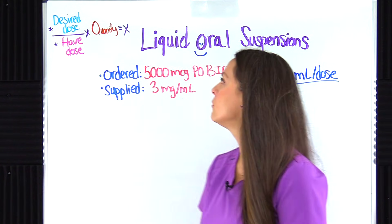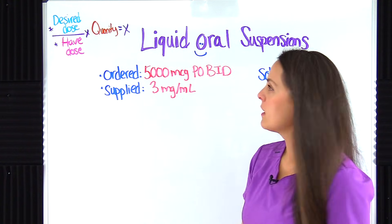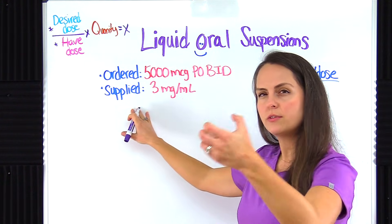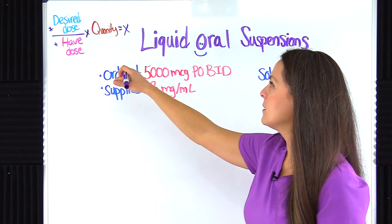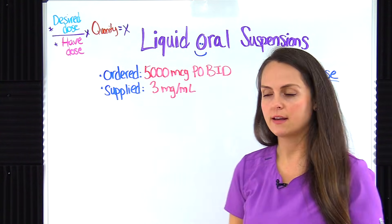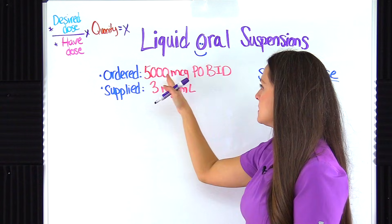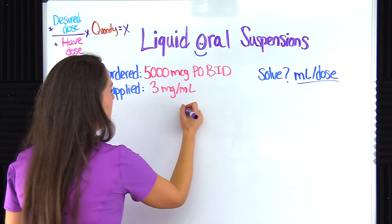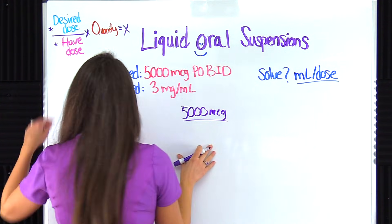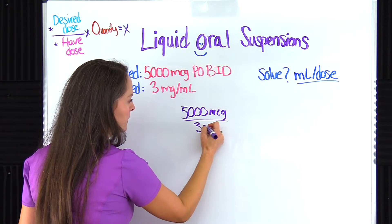Let's just plug it into our formula. The formula says: you put the desired dose on top — what the healthcare provider ordered — over what you have on hand, which is what you're supplied with from pharmacy, holding that bottle. Then times the quantity, which is the volume. Divide and multiply that out and that equals x, which is what you're going to give. So our desired dose is 5,000 micrograms, and what we have on hand is 3 milligrams.